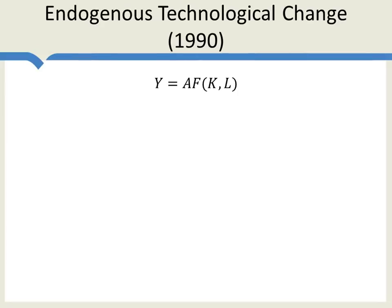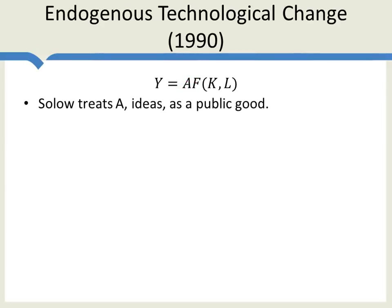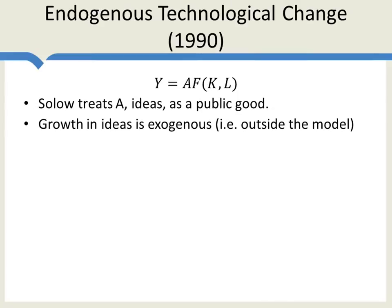Let's remember the Solow model. In the Solow model, output is a function of A — which is ideas — and a combination of capital and labor. Now, Solow made two assumptions about ideas. First, ideas were a public good — freely available to anyone in the world. Second, the growth in ideas was exogenous, that is, outside the model. Ideas just kind of accumulated over time.